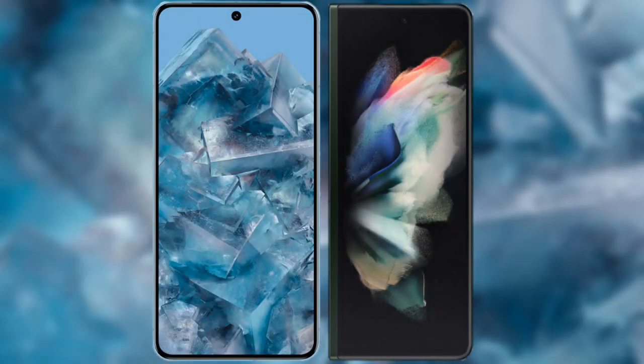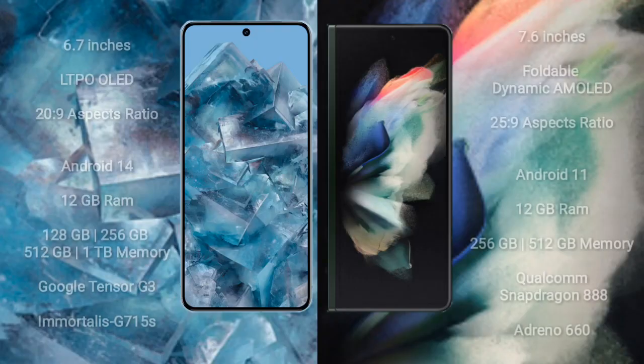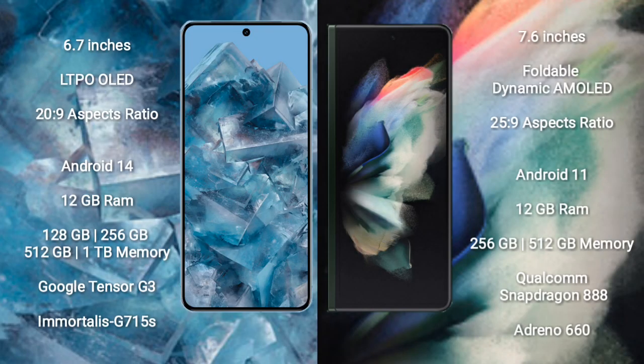I will compare the new Google Pixel 8 Pro with Samsung Galaxy Z Fold 3. Google Pixel 8 Pro comes with a 6.7-inch LTPO OLED display at a 20:9 aspect ratio. Samsung Galaxy Z Fold 3 comes with a 7.6-inch foldable dynamic AMOLED display at a 25:9 aspect ratio.